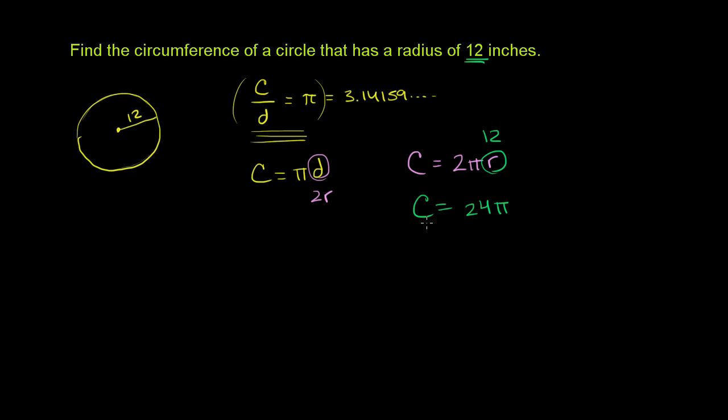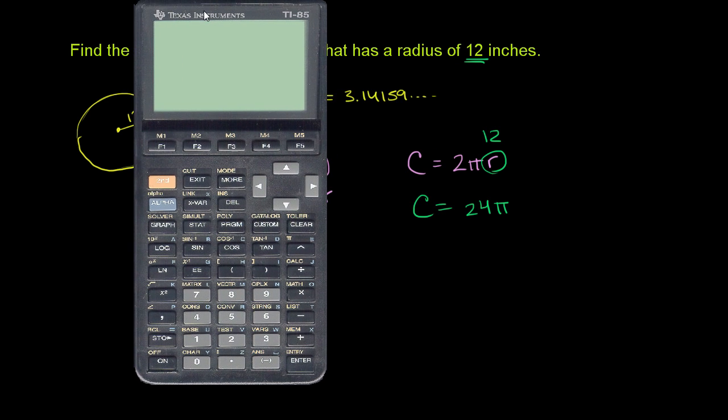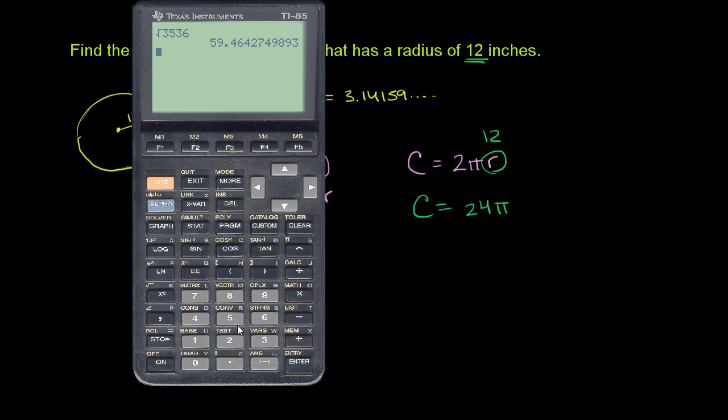If we want the exact number, remember pi is an actual number. It's 3.14159 and keeps on going on and on forever. Let's actually get our calculator out. So we can multiply 24, and then we have to find pi here. Pi is right in yellow there. So I press second and that right over there. 24 pi, which literally just means 24 times the number pi, which is 24 times 3.14159 on and on and on. And we get 75.398.